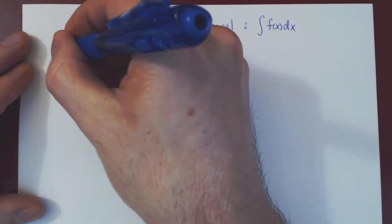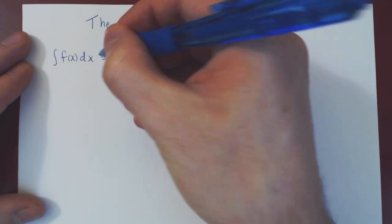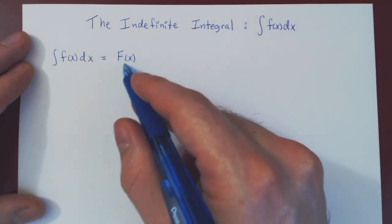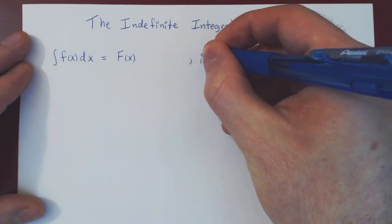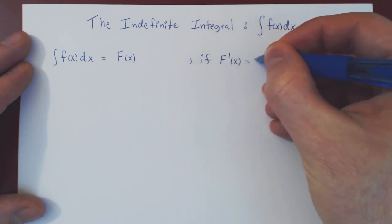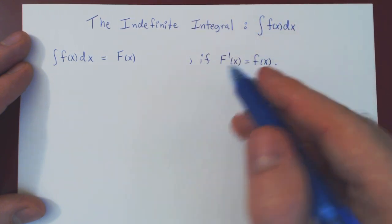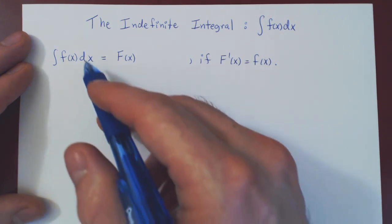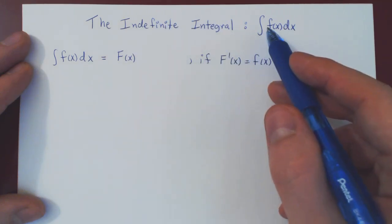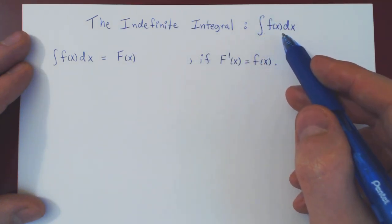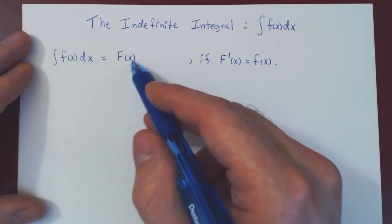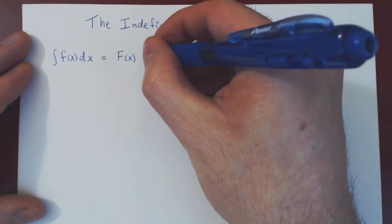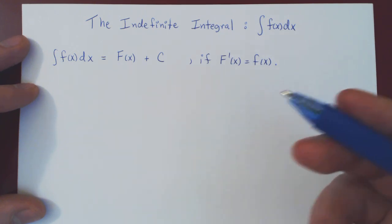So if we write the integral of f of x dx, this is equal to — connecting now our notion of antiderivatives — uppercase F of x. If uppercase F of x has a derivative lowercase f of x, so if uppercase F is an antiderivative of lowercase f of x, we're not looking for just one antiderivative, but all such antiderivatives. All other antiderivatives can be obtained from the one you found, plus an arbitrary constant C.